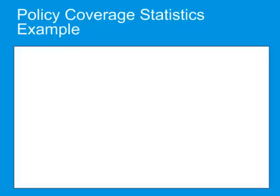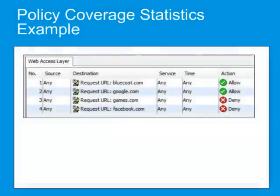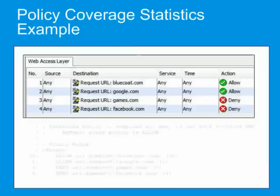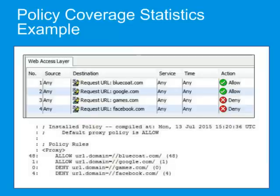Here is an example of a simple policy configuration. In this example, all requests for Bluecoat.com and Google.com are allowed, but all requests for Games.com and Facebook.com are denied. Here's how these policies appear on the Policy Coverage page.